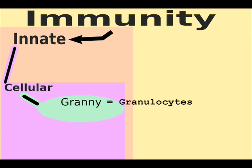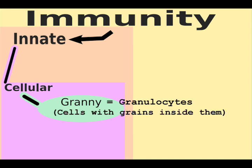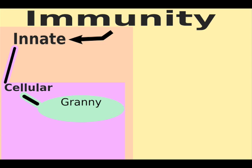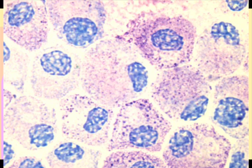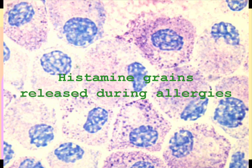Granny stands for granulocytes. Granulocytes are cells that have grains inside them. There are two types of grainy cells: mast cells and the phils. Mast cells release their grains during allergies — you may have heard of histamine from mast cells.